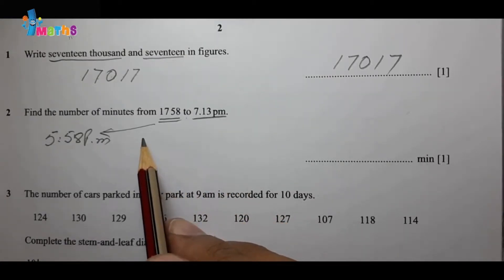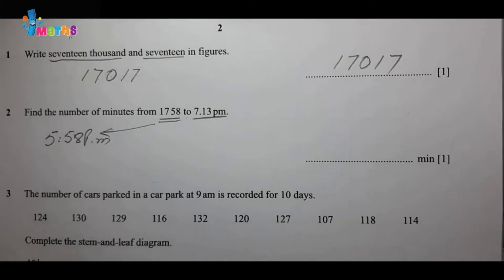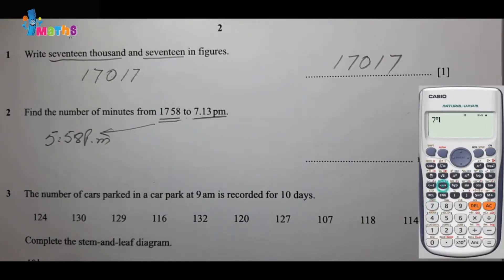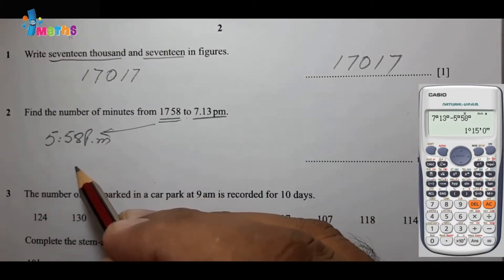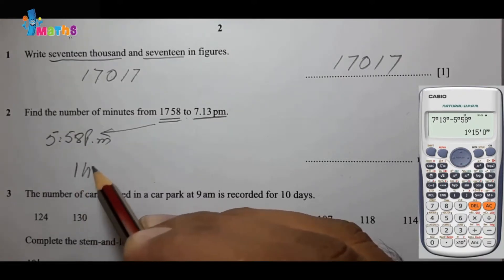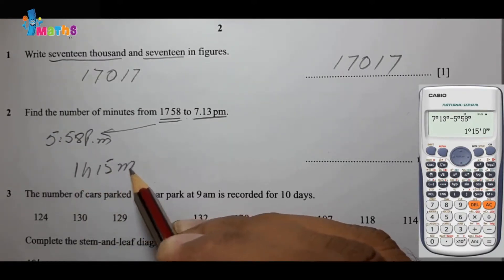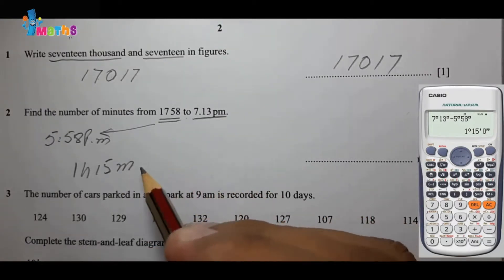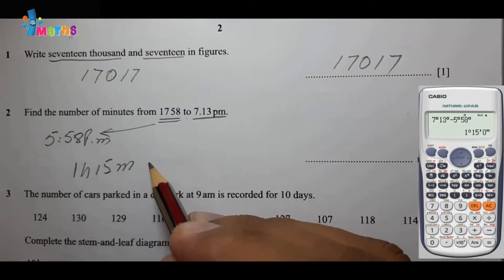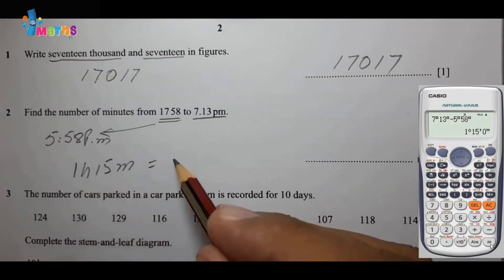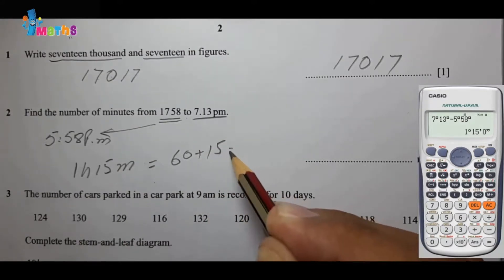I'll tell you how to use the calculator. Now let us do the same thing on calculator: 7 hours 13 minutes minus 5 hours 58 minutes. This will show you 1 hour and 15 minutes. You can check on screen. 1 hour 15 minutes can be converted into minutes, and we can write it as 60 plus 15 minutes, which is equal to 75 minutes.